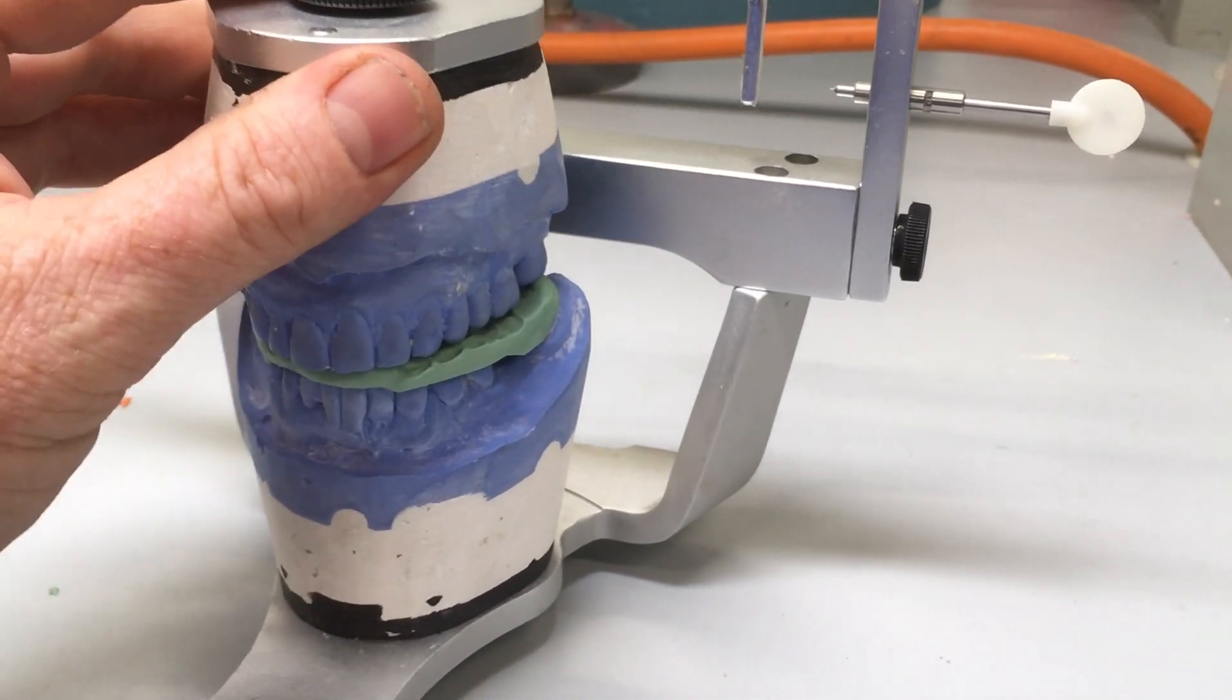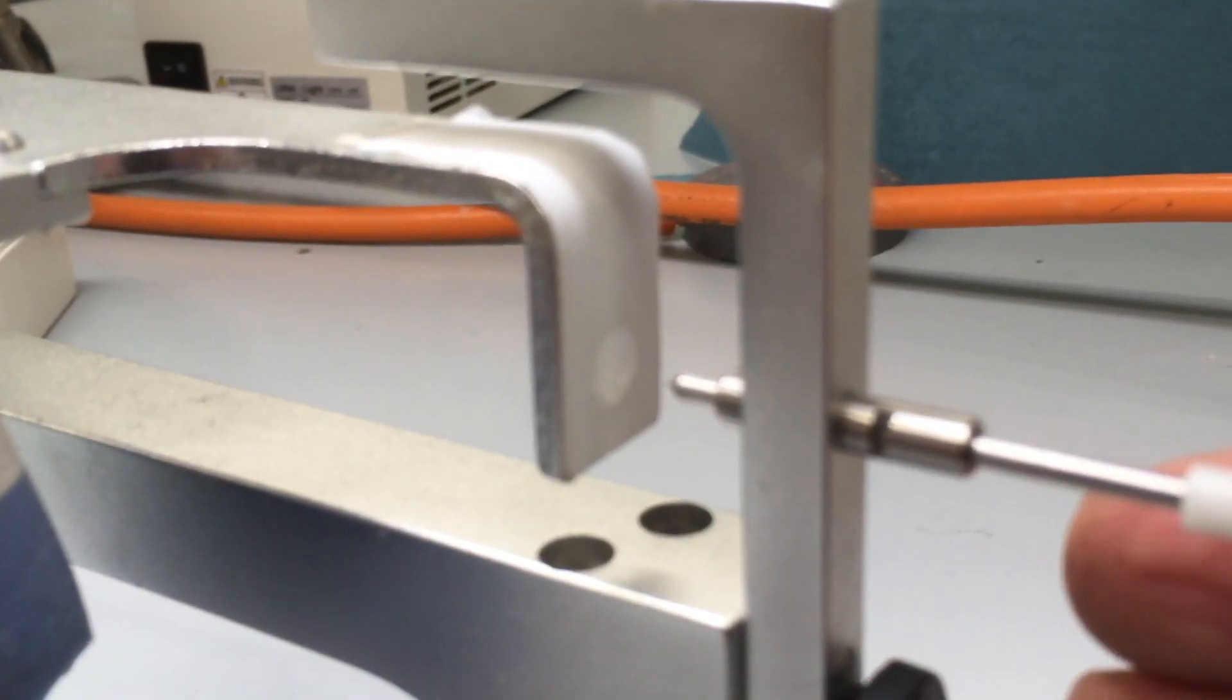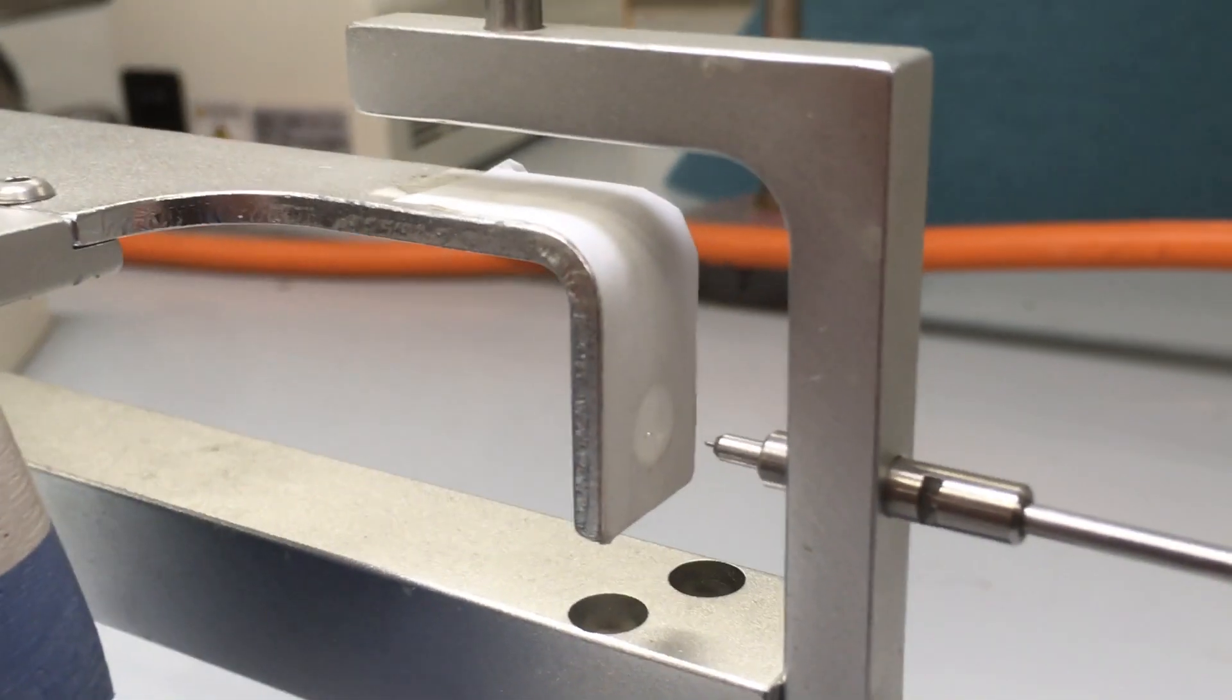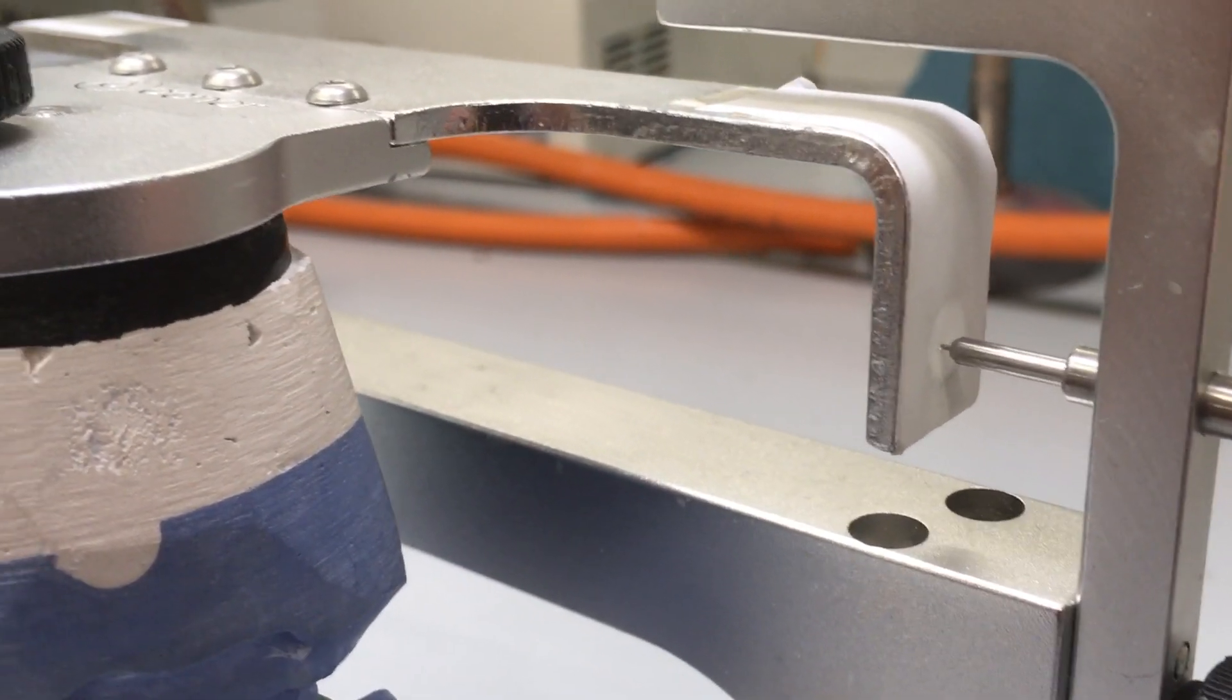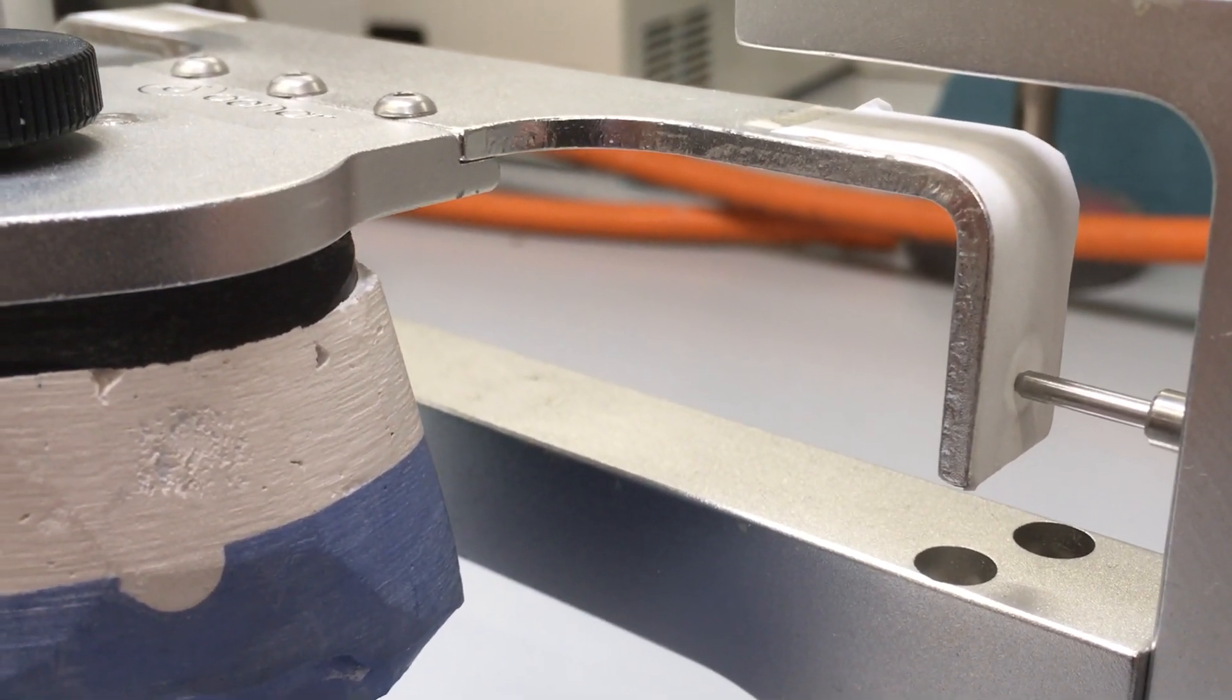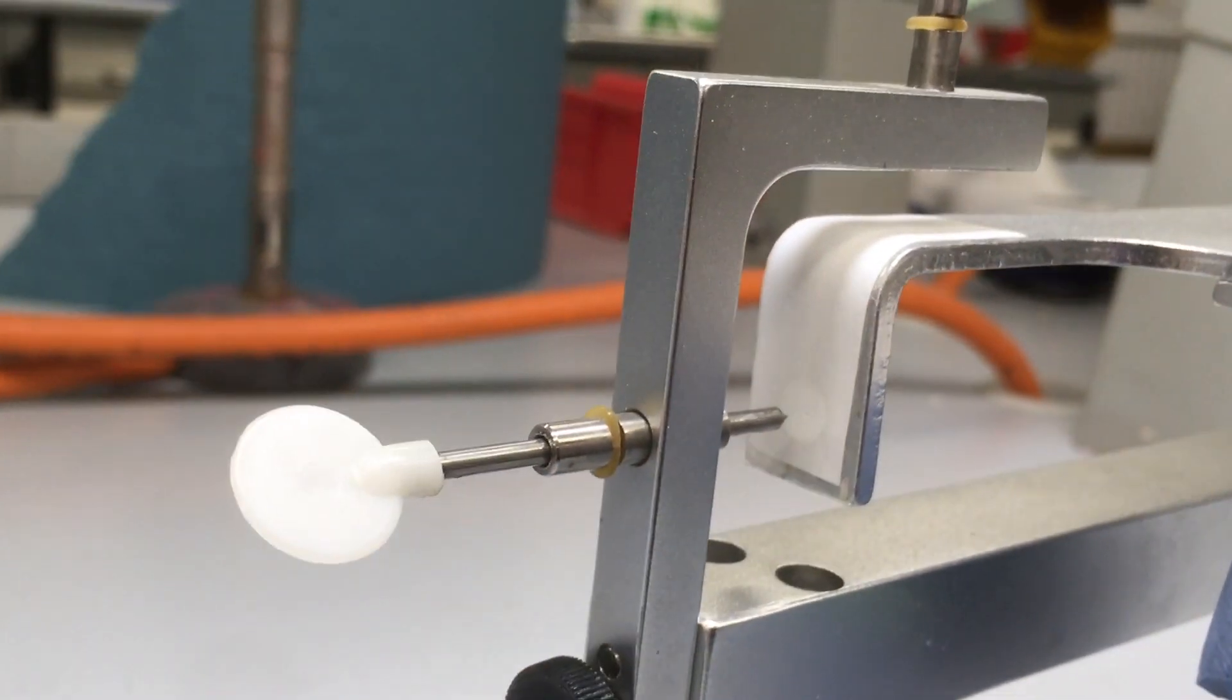pop the stylus in, and if they're both the same, the pin should go through the same hole. And in this case it does, so these two centric relation records are the same.